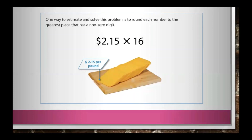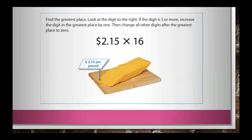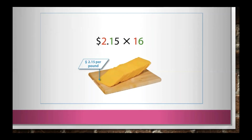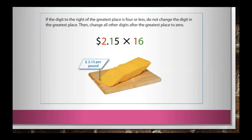One way to estimate and solve this problem is to round each number to the greatest place that has a non-zero digit. To round a number to the greatest place: find the greatest place and look at the digit to the right. If the digit is 5 or more, increase the digit in the greatest place by 1, then change all other digits after the greatest place to 0. If the digit to the right is 4 or less, do not change the digit in the greatest place, then change all other digits after the greatest place to 0.